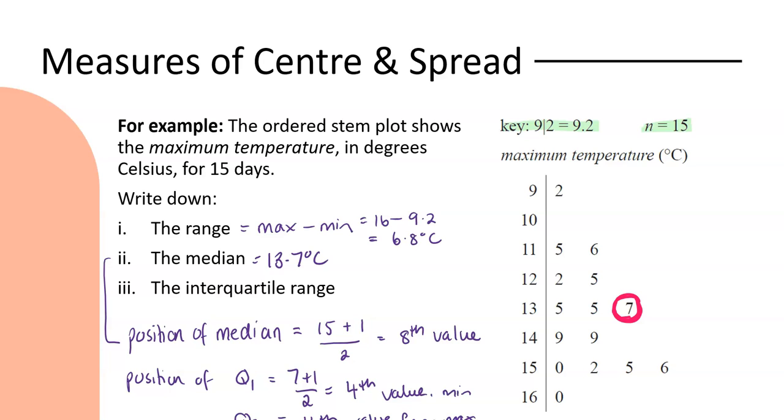And working my way in. So I start at the minimum 1, 2, 3, 4. So I've got Q1 is 12.2. And from the maximum 1, 2, 3, 4. My Q3 is 15.2. Which gives me an interquartile range of 3 degrees Celsius. So there's my three key values that I wanted to find. My range at 6.8, my median at 13.7, and my interquartile range at 3.